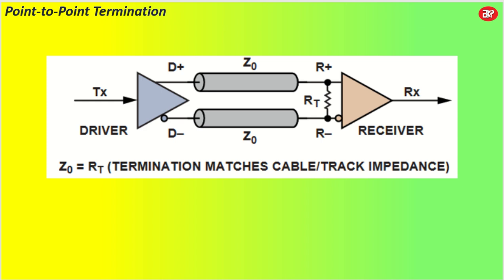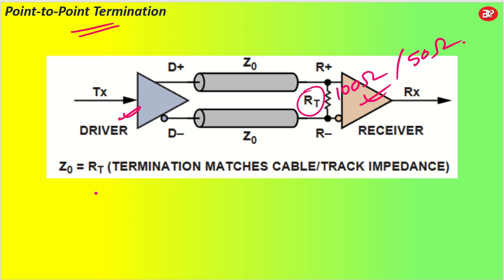Now let's talk about point-to-point termination. This is my LVDS driver and this is my LVDS receiver. There is a termination resistor — let's say 100 ohm, or sometimes 50 ohm — which will be mentioned in the data sheet of your LVDS driver or receiver. The trace you have to manage must be matching to your RT, which means Z0 must be equal to RT — termination must match the cable trace or impedance. Cable trace impedance must be matched with your termination resistor; otherwise there will be a lot of fluctuations and noise immunity will not be achieved.